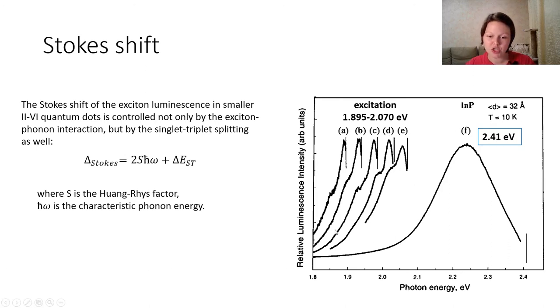Here we can see different Stokes shift under narrow band edge excitation. Spectra from A to E represent the luminescence spectrum under excitation in the red tail on the onset region of the absorption spectrum from these energies. But spectrum F represents a global emission spectrum under the excitation of this energy. The Stokes shift of the exciton luminescence in smaller nanocrystals or quantum dots is controlled not only by the exciton-phonon interaction, but also by the singlet-triplet splitting as well.